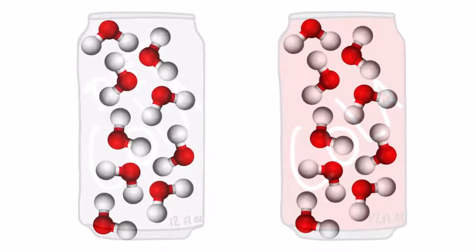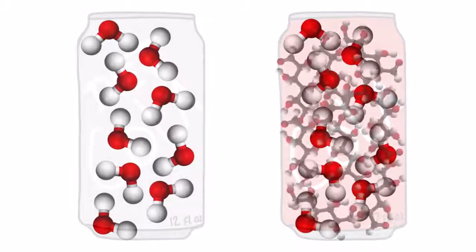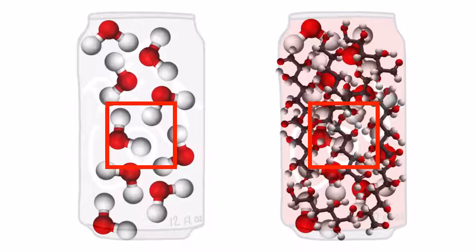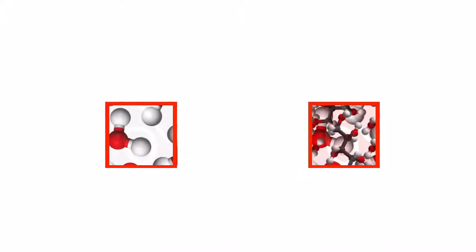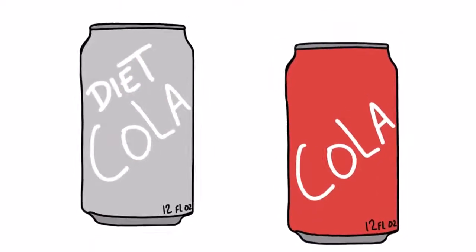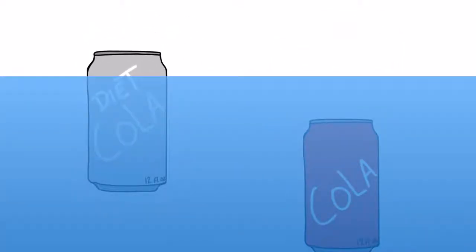The main ingredients in cola are carbonated water and sugar. So each can has the same amount of water molecules, but in the same space, the regular cola has additional molecules from the sugar. Putting more atoms in the water forces the molecules to be more dense, making the cola sink.